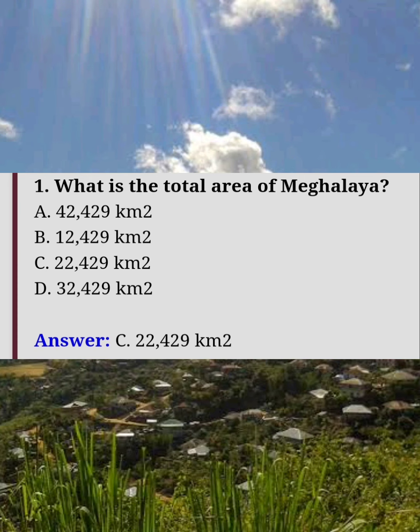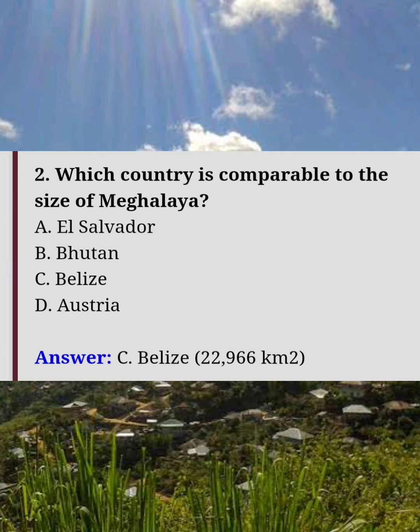What is the total area of Meghalaya? Answer C: 22,429 km². Which country is comparable to the size of Meghalaya? Answer C: Belize.